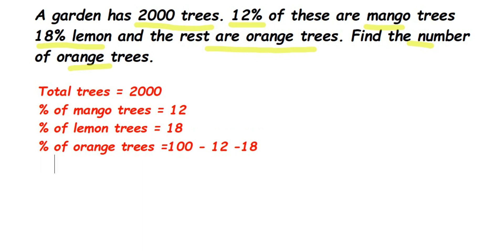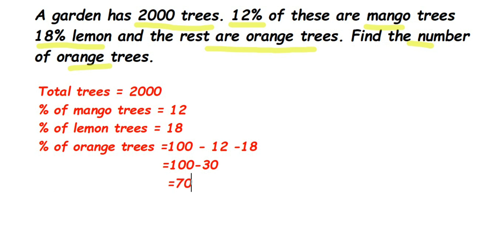So: 100 minus 12 minus 18. Adding 12 and 18 gives 30, and 100 minus 30 equals 70. So 70% of the trees are orange trees.